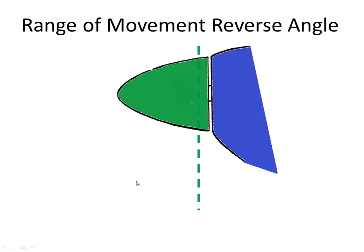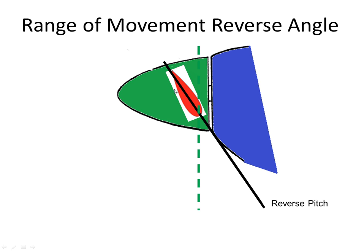The variable propellers have a range of movement that varies from reverse right up to feather. When we speak about this movement we are really talking about the blade angle. The blade angle is the angle between the extended chord line and the propeller plane of rotation.